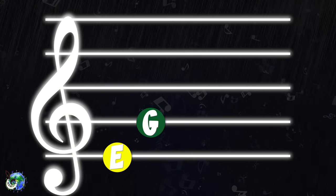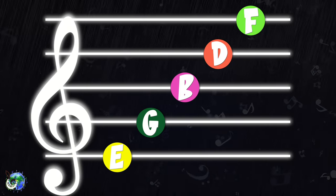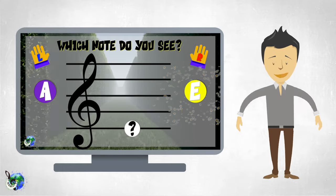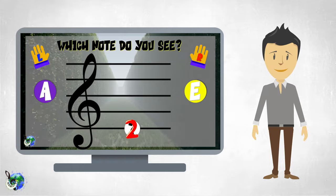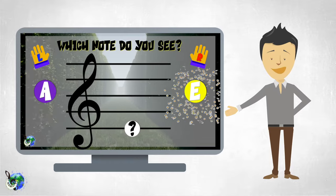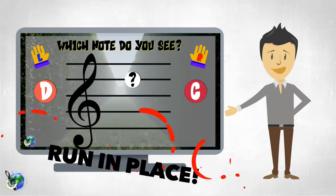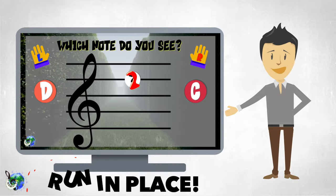Challenge 2: The notes on the treble clef staff lines. Remember, the lines of the treble clef staff are E, G, B, D, F. On each side of the screen will be a letter. While running in place, put your left or right hand out to grab the letter that fits the note found on the line. You will hear a countdown of 3, 2, 1. After the countdown, say the correct letter.